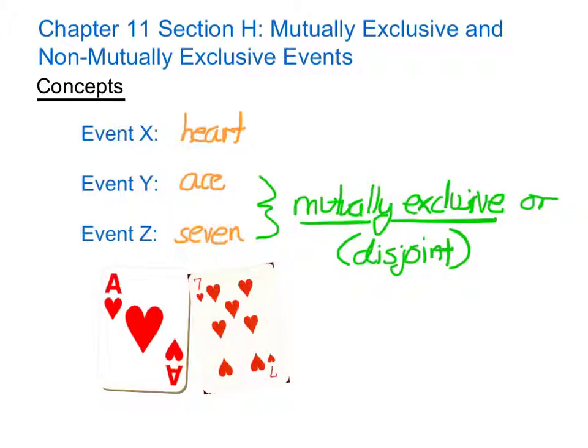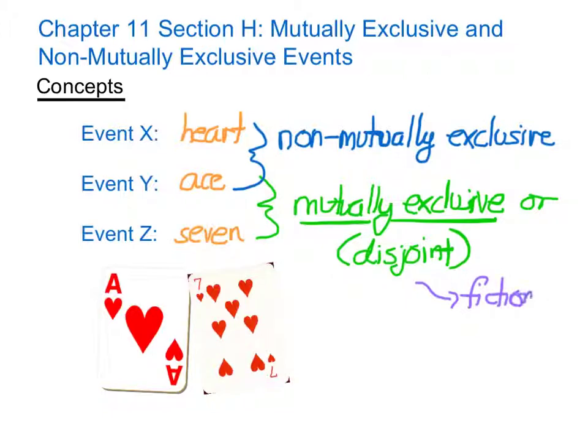On the other hand, Event X and Event Y are Non-Mutually Exclusive, and this is the confusing part. This is where the terminology gets a little cumbersome. Non-Mutually Exclusive means that they can overlap. The heart does not prevent an ace from being drawn. Think of it this way: we have fiction, which is a made-up story, and we have non-fiction, which is a true story. If you're used to using these terms in your English classes, just remember that Mutually Exclusive prevents two events from happening at the same time. Non-Mutually Exclusive means that they can happen at the same time or that they can be true.